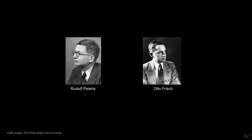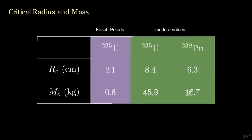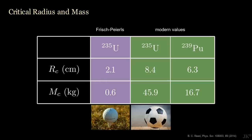Most of the calculations of Frisch and Peierls were correct. However, they used very crude values available in 1940. Using modern values, we find that uranium-235 has a critical radius of 8.4 cm, closer to a soccer ball than a golf ball. The critical mass becomes almost 46 kg.